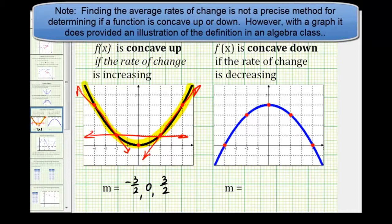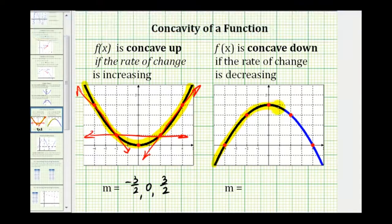Similarly, a function that's concave down will have a shape like this that looks like an upside down cup that would not hold water. But again, more formally, a function is concave down if the rate of change is decreasing.